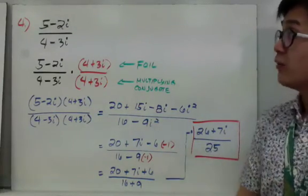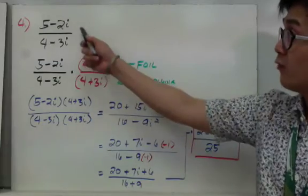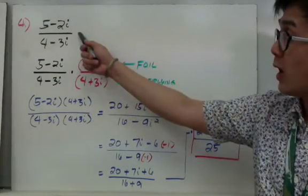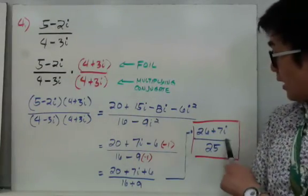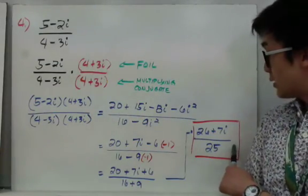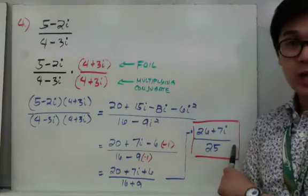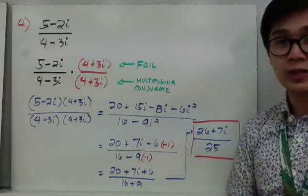So the final answer for rationalizing 5 minus 2i all over 4 minus 3i is 26 plus 7i all over 25.